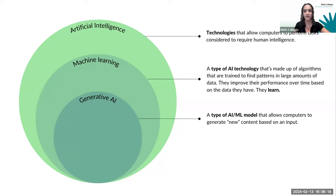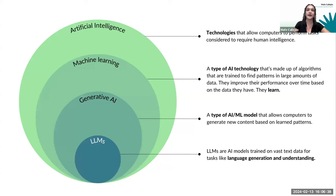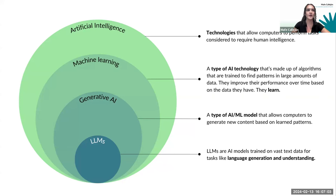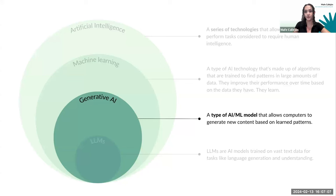Then we have generative AI, or Gen AI, which is a type of AI and machine learning model that allows computers to generate new content based on input — text, images, audio, anything you can imagine. And last but not least, we have LLMs, which stands for Large Language Models — AI models trained on vast text data for tasks like language generation and understanding. This is what tools like ChatGPT, Copilot, Gemini, and previously Bard are based on — giving us the capacity to have a conversation with these tools.